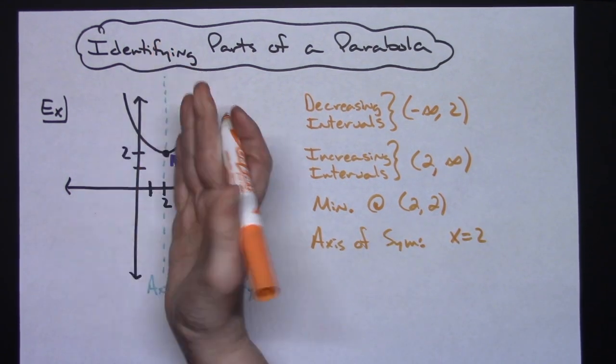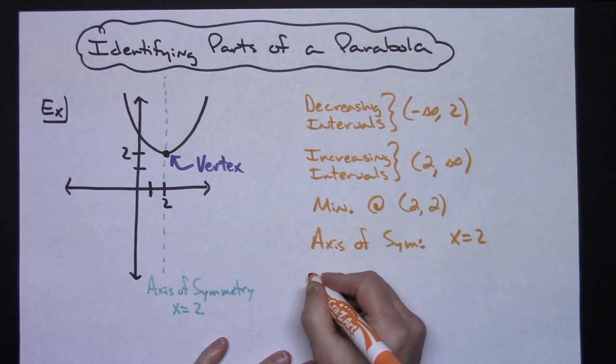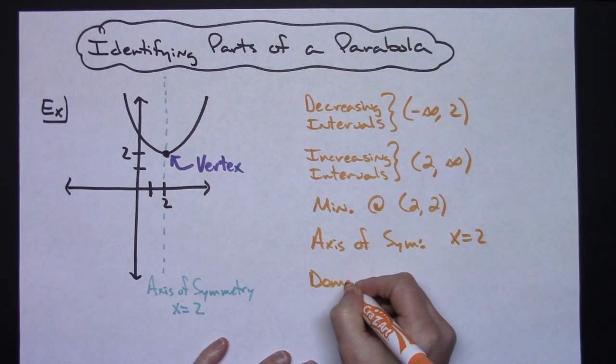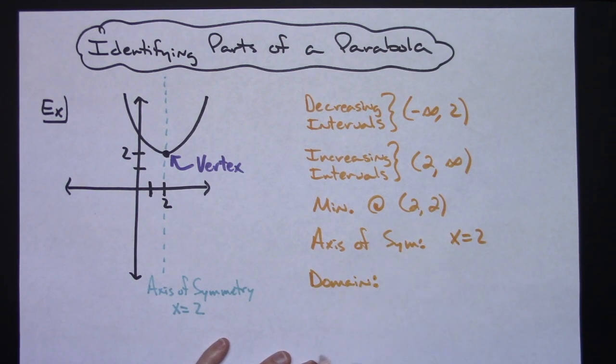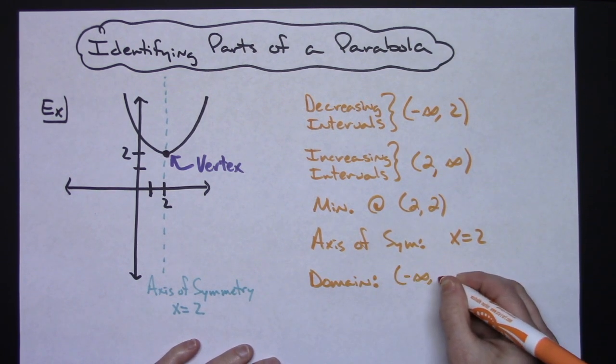Let's go ahead and also do domain and range. The domain of this parabola—well, it is a polynomial, the curve is smooth and continuous everywhere, it goes on forever and ever. So because it is that polynomial curve, we know the domain is all reals, or negative infinity to positive infinity if we're using interval notation.